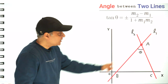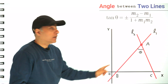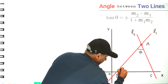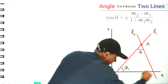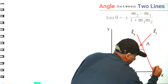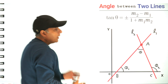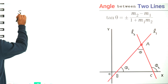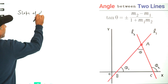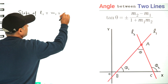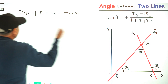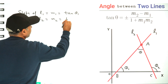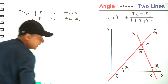We have taken two lines l1 and l2 in this coordinate plane which are intersecting each other at an angle theta. Let's say l1 is making an angle theta 1 with the x-axis and l2 is making angle theta 2 with the x-axis. If a line makes an angle theta 1 with the x-axis then its slope m1 equals tan theta 1, and slope m2 of l2 equals tan theta 2.